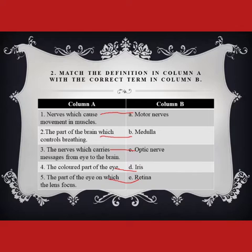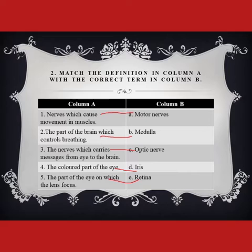The colored part of the eye is the iris. The part of the eye on which the lens focuses is the retina, and image formation also occurs in the retina. You will label and match these with a pencil.